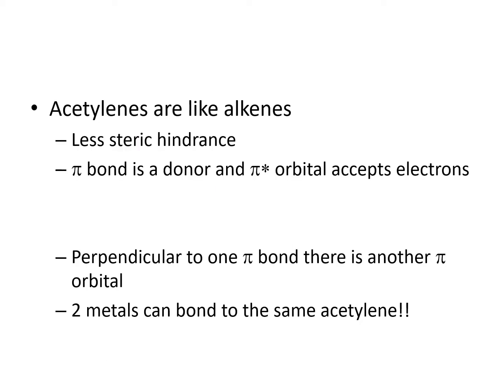To summarize: acetylenes are like alkenes but with less steric hindrance, especially in cyclic cases. The pi bond donates electrons and the empty pi star orbital accepts electrons from the metal, weakening the C–C bond and converting the sp carbon to sp2. This results in two metal–carbon bonds, and the complex can be described as a metallocyclopropene.